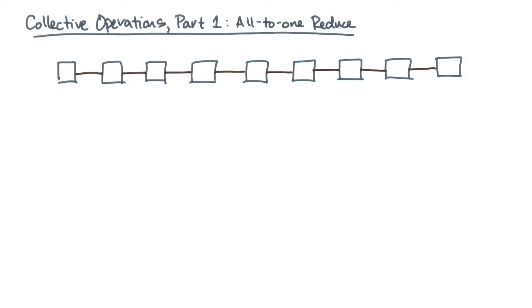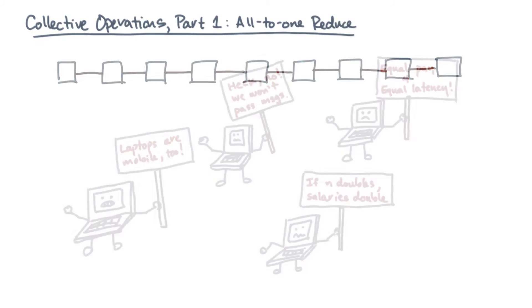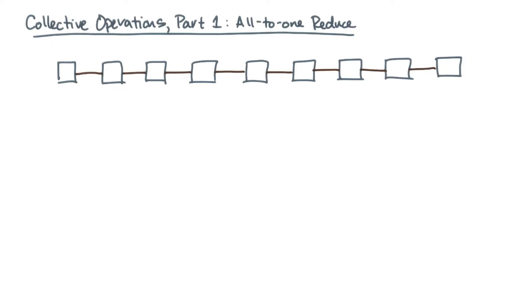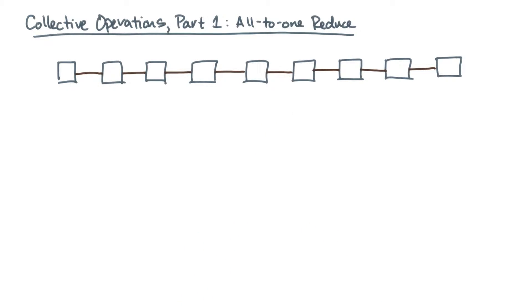An important class of distributed memory algorithmic primitives are the so-called collective operations — not that kind of collective. One example of a collective operation is a reduction, which in the distributed memory case I will call all-to-one reduce. The phrase 'all to one' makes it clear that all nodes participate to produce a final result on one node.